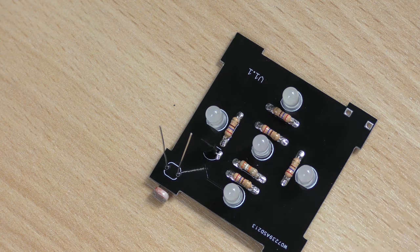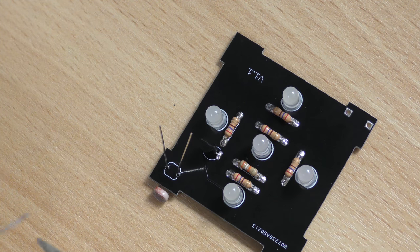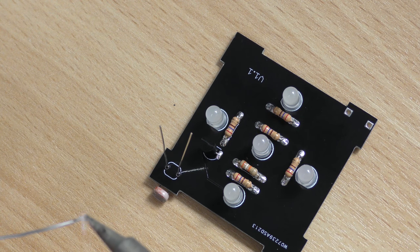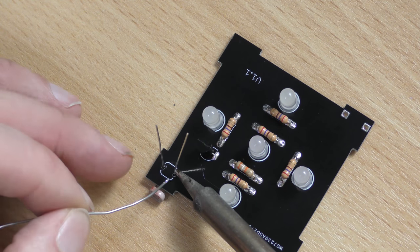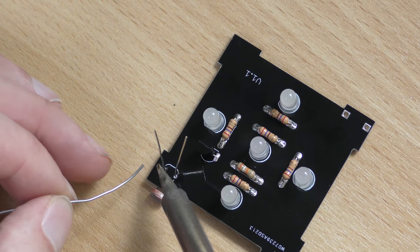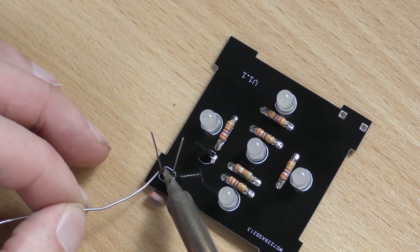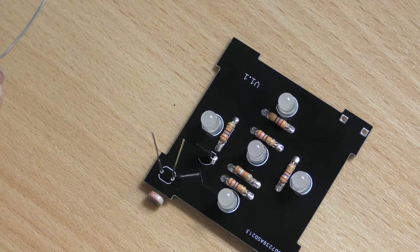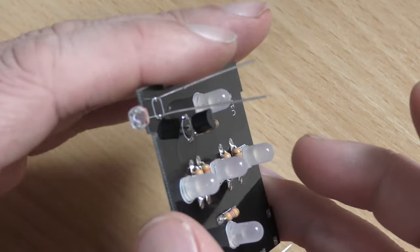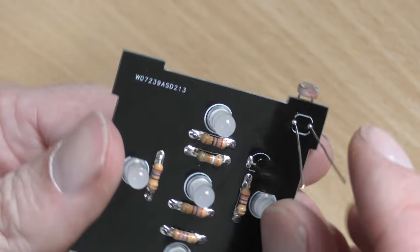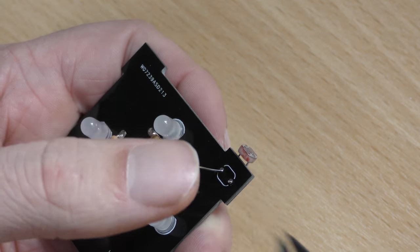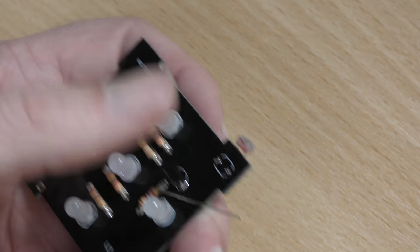So if I grab my solder, which just fell off the desk, clean my iron, tin it, and then just heating the pad and the leg. There you go, so that's the LDR soldered in. So again, you want to snip away the legs.